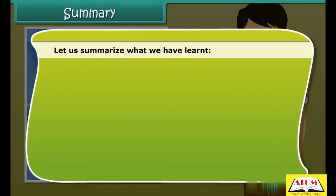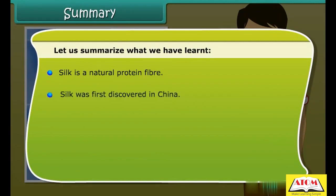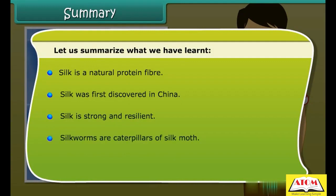To summarize: silk is a natural protein fiber. Silk was first discovered in China. Silk is strong and resilient. Silk worms are caterpillars of the silk moth. Silk fiber is obtained from the cocoons spun by silk worms.